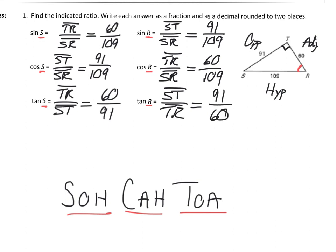Now that I've completed all the ratios for angle S and angle R, I can see the comparison. Sine of R and cosine of S are the same. Sine of angle S and cosine of R are the same. That's because the opposite and adjacent sides switch places. The same goes for the tangent functions — when the angle changes, the opposite moves to where the adjacent is and the adjacent moves to where the opposite is, so those two are just reciprocals of one another.